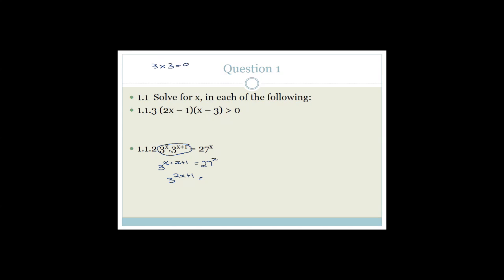Since 3 times 3 times 3 equals 27, we can write 27 to the x as (3 cubed) to the x, which is 3 to the 3x. So we have 3 to the (2x plus 1) equals 3 to the 3x. With common bases, we cancel them: 2x plus 1 equals 3x. Solving: 1 equals 3x minus 2x, therefore x equals 1. How easy was that once you realized 27 is 3 cubed? Always look for common bases.